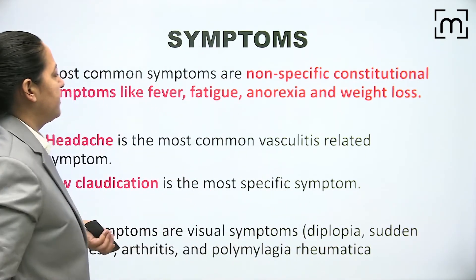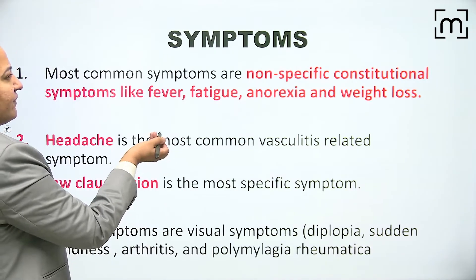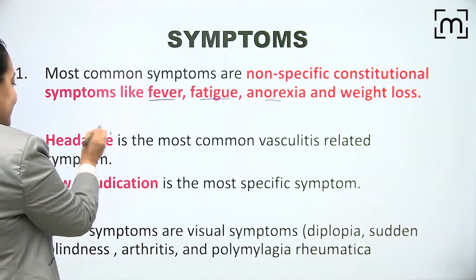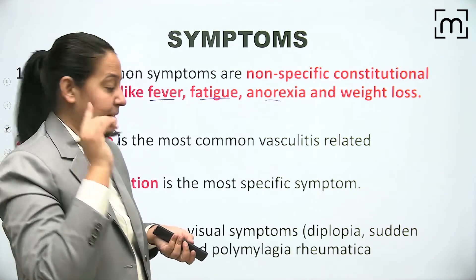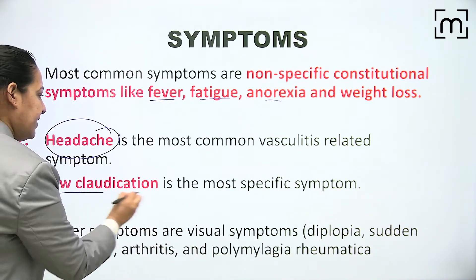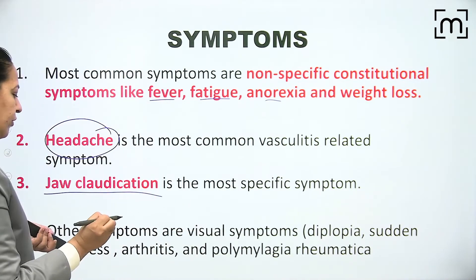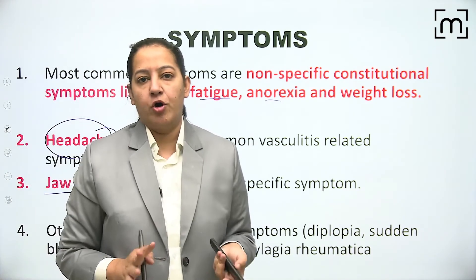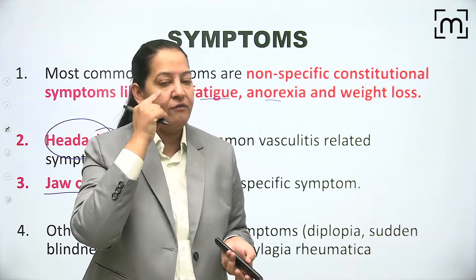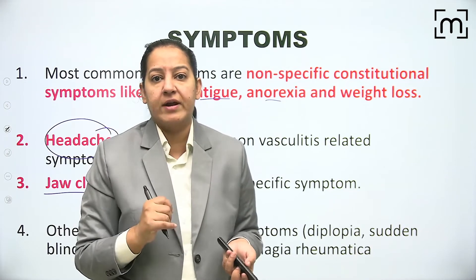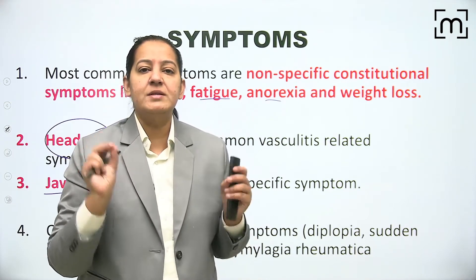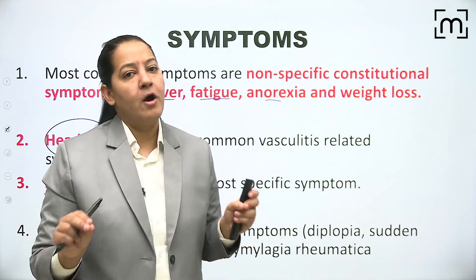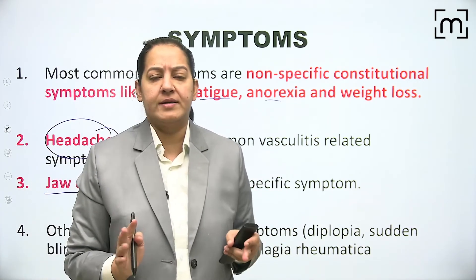Symptoms include non-specific constitutional symptoms like fever, fatigue, weight loss, anorexia, and headache - typically temporal headache. The patient can also have jaw claudication. If the ophthalmic artery is involved, the patient can develop blindness, which is the most deadly complication of giant cell arteritis.